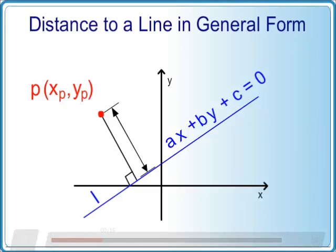This line equation form is the general form, as we have the right hand side equal to zero.